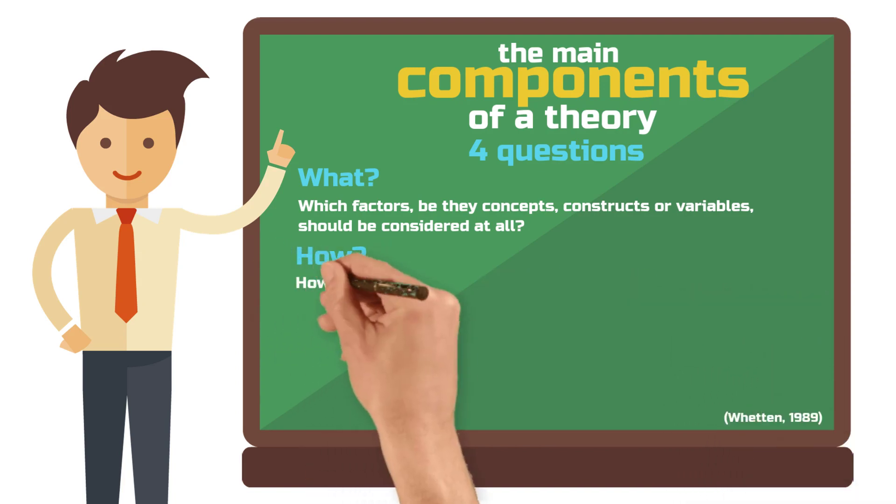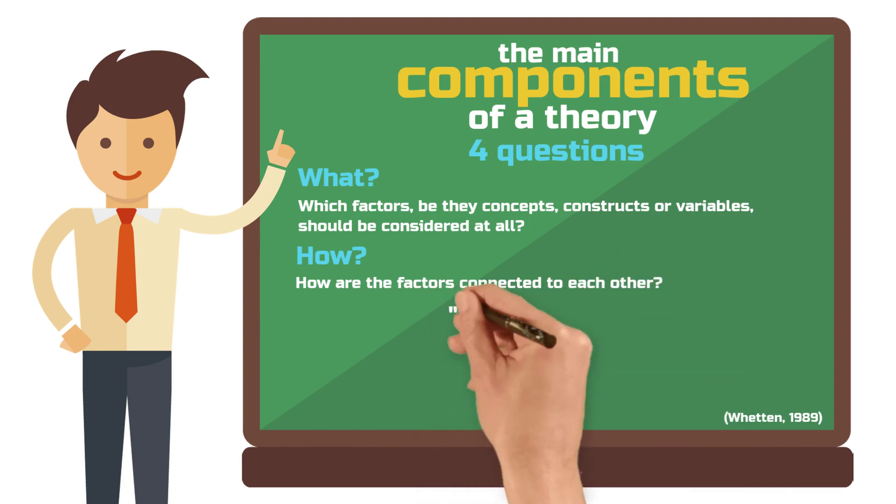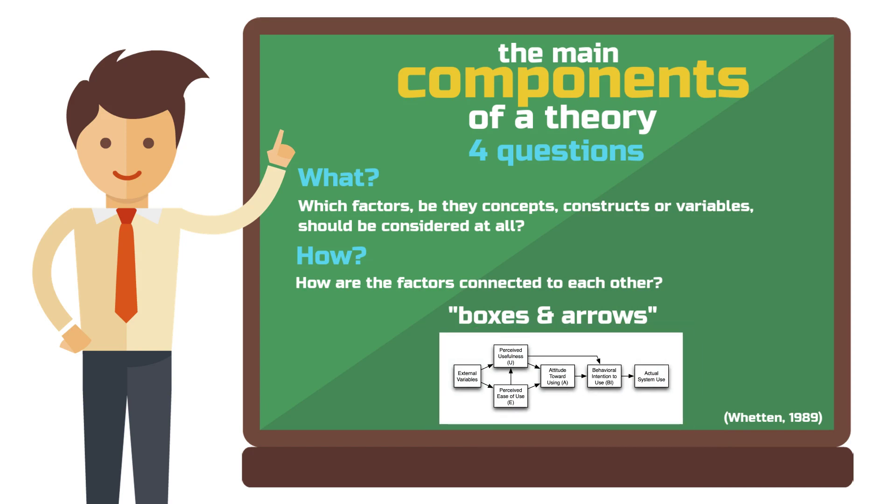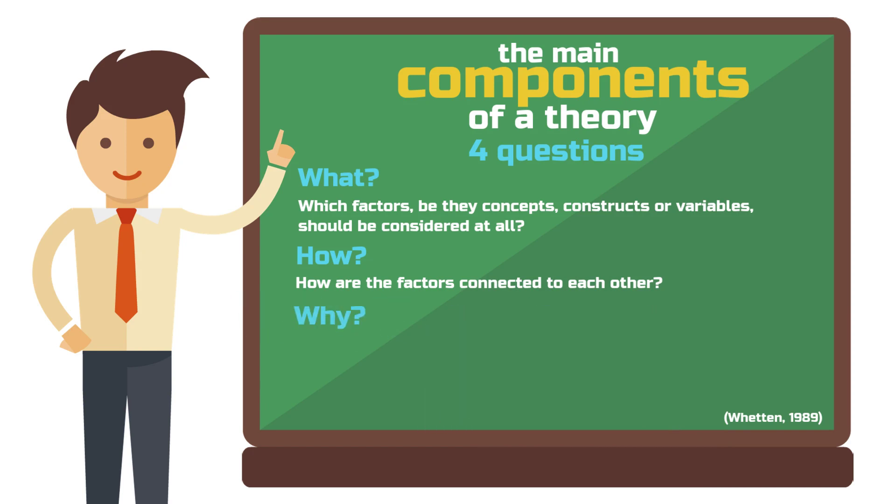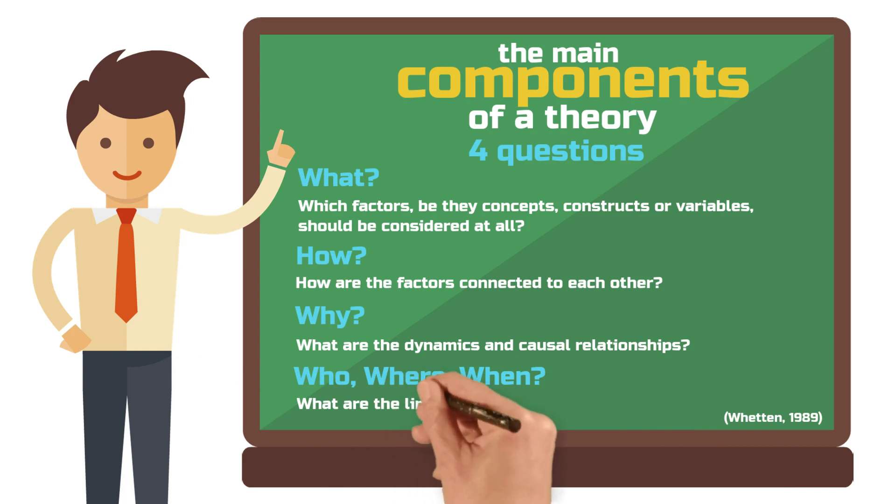How? How are the factors connected to each other? You can easily imagine this with the boxes and arrows that are usually used as a graphic element to illustrate a theory in 2D. Why? What are the dynamics that the theory tries to model? What are the causal relationships that the theory assumes? Who, where, when? What are the limitations of the theory and who or what can it not represent?